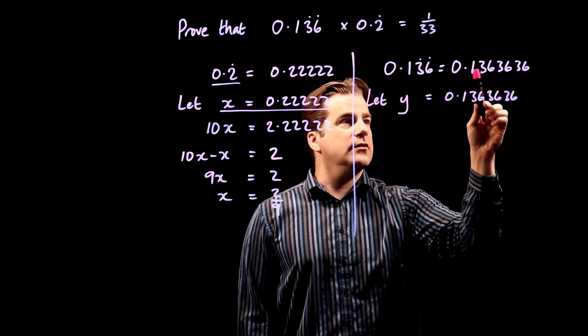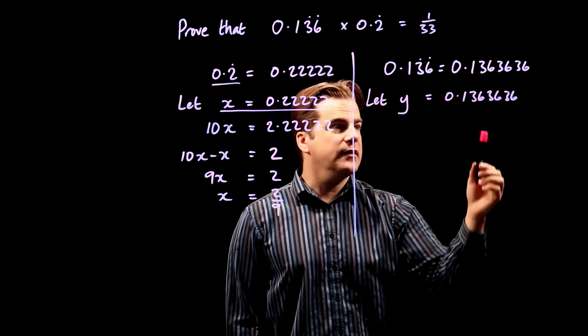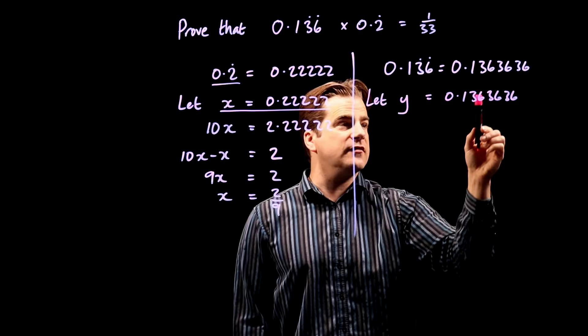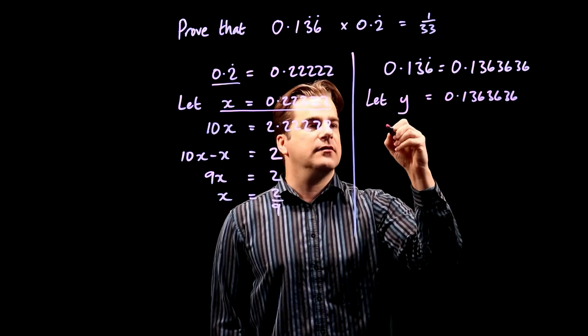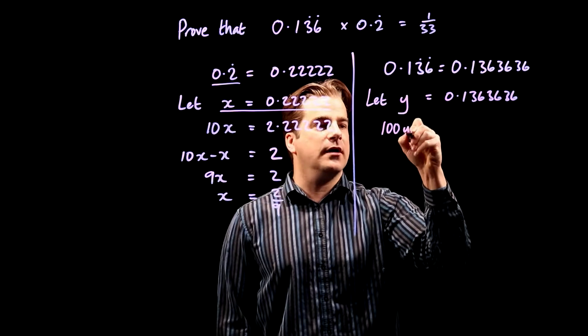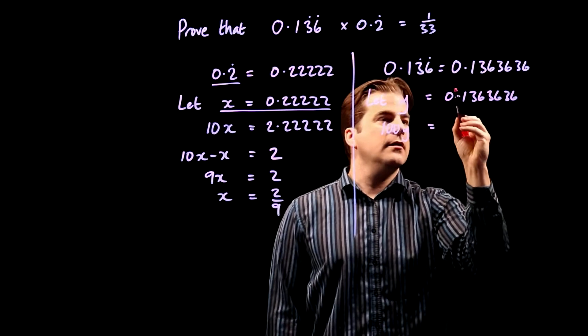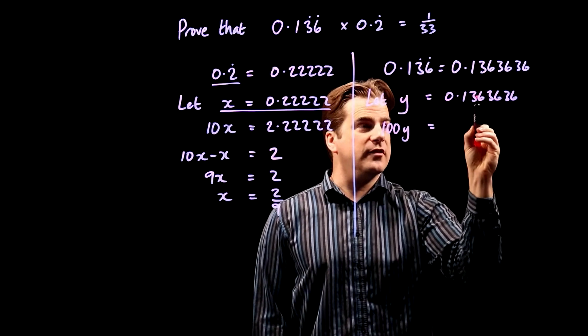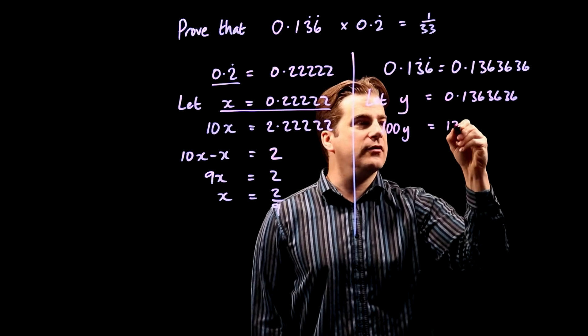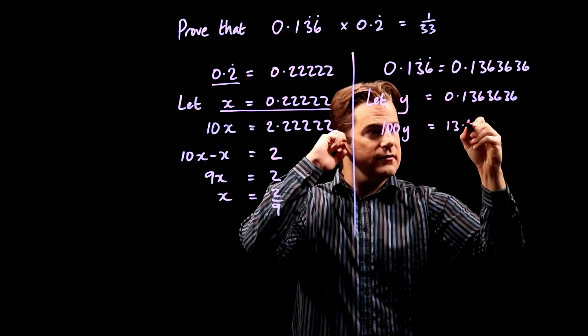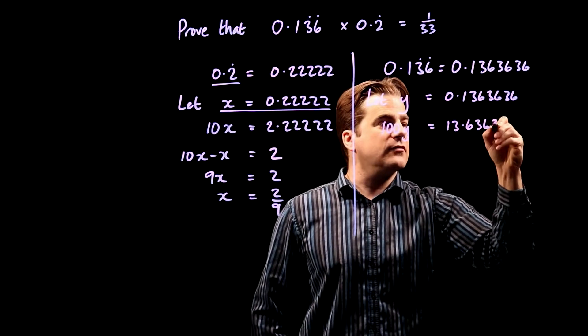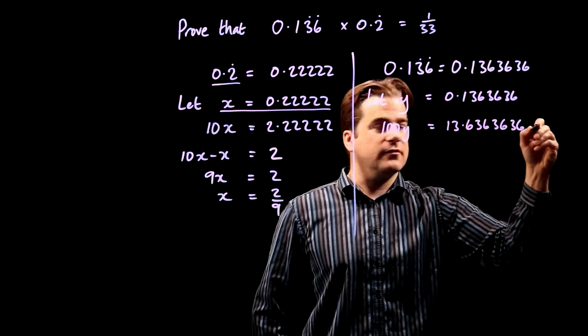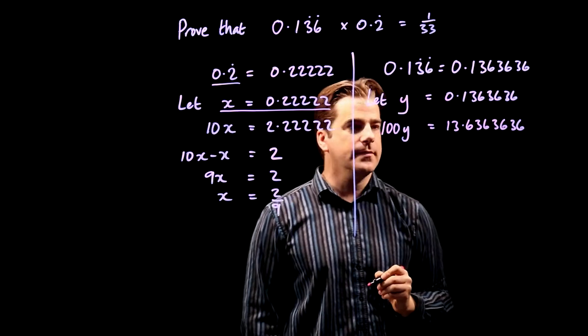Now, when there are two digits repeating, in this case, there are two, it's the 3 and the 6, you multiply by 100. So 100y equals, the decimal point is going to move two positions to the right, so we get 13.63636363636 forever.